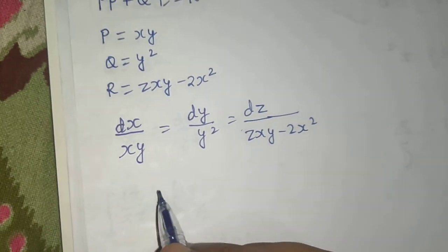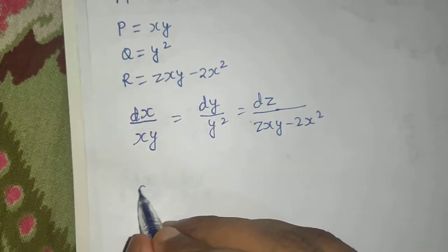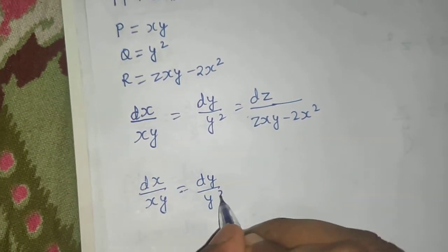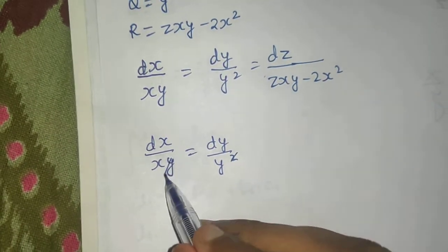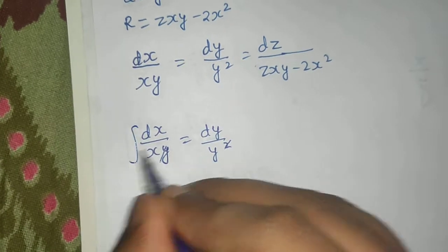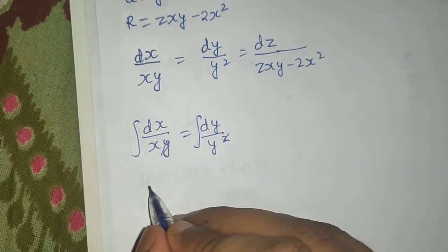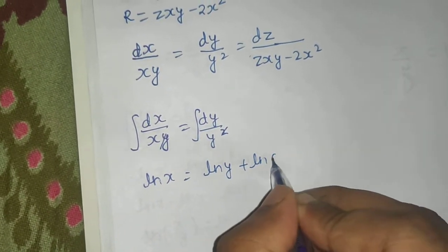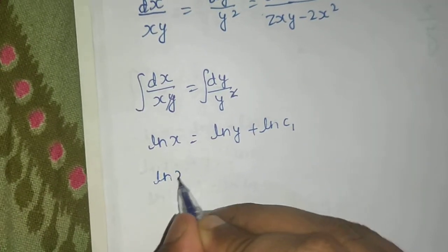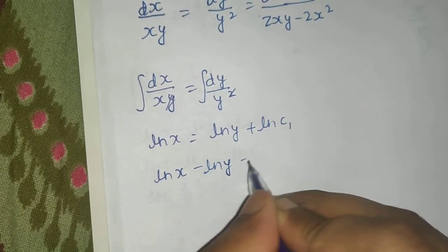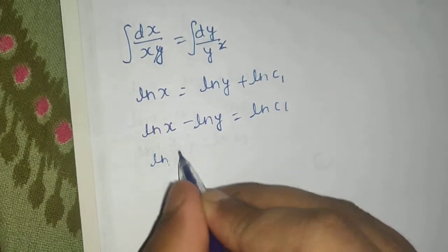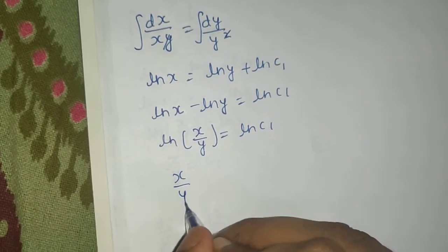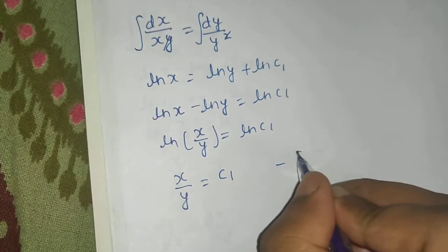Now we equate this fraction one by one. First, equating the first and second fractions: dx by xy equals dy by y squared. One y cancels out, so we integrate both sides. Integration of dx by x is ln x, and dy by y is ln y. Writing the constant as ln C1, we get ln x minus ln y equals ln C1, which gives x by y equals C1. This is our first equation.